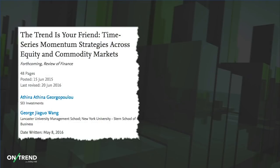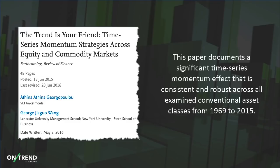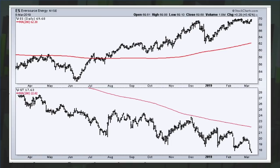There's also a paper by Georgiopoulou and Wang, titled 'The Trend is Your Friend' — a very appropriate title. They looked at time series momentum across equity and commodity markets, and their paper documented a significant time series momentum effect that is consistent and robust across all examined conventional asset classes from 1969 to 2015. In charting terms, using a simple 200-day moving average, you have a much better chance of making gains by picking stocks above their 200-day moving average and avoiding stocks below it.